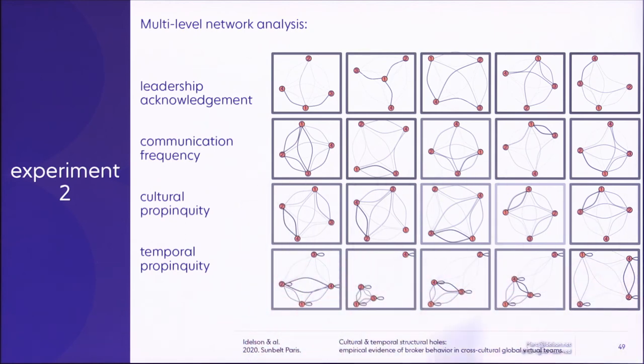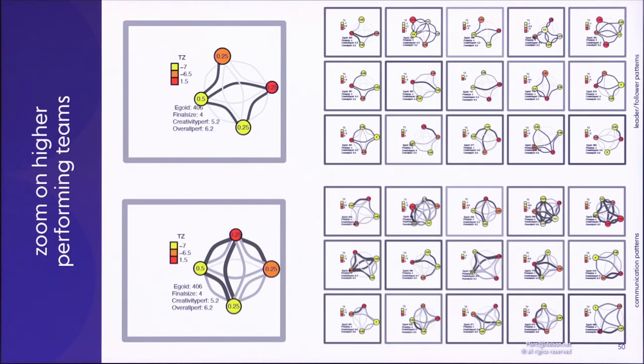And they're all illustrated below. Of course, it's impossible to read on the slide, but here are zooms into five of these teams. So when we talk about multi-level network analysis here, we're talking about for the same team members showing the different patterns between leader-follower in the top row, communication frequency in the middle row, cultural propinquity in the third row, and temporal propinquity in the final row. And here is us fooling around with different ways to represent the same information, putting the information about all four levels into a single chart.